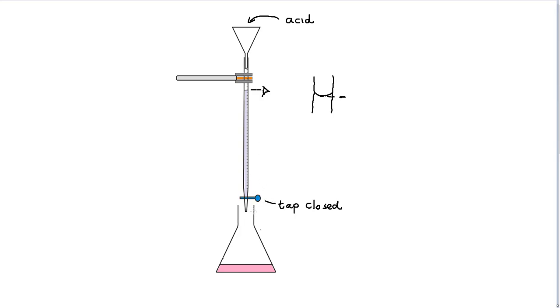The next step is to open the tap and very carefully allow the acid to mix with alkali and indicator. We're going to open the tap and carefully the acid will pass into the alkali, and we're going to gently swirl the conical flask around so that the acid and alkali are mixing properly. We're going to do this very slowly.